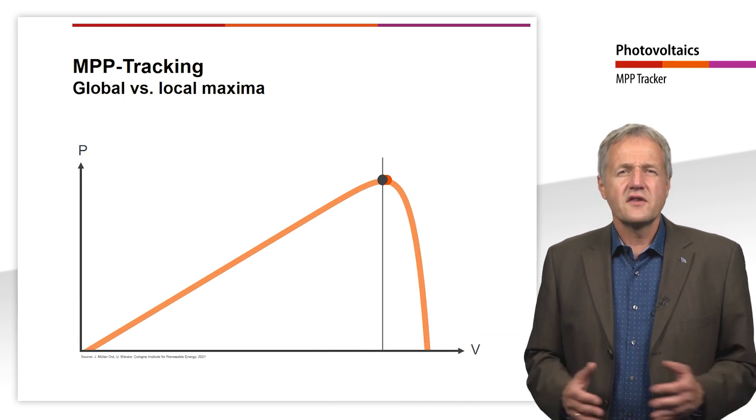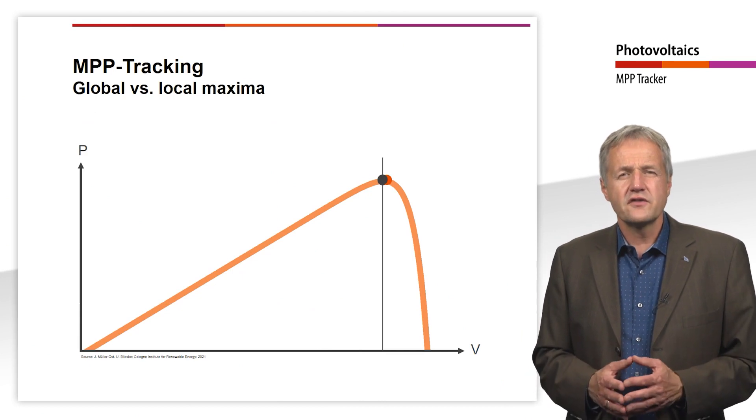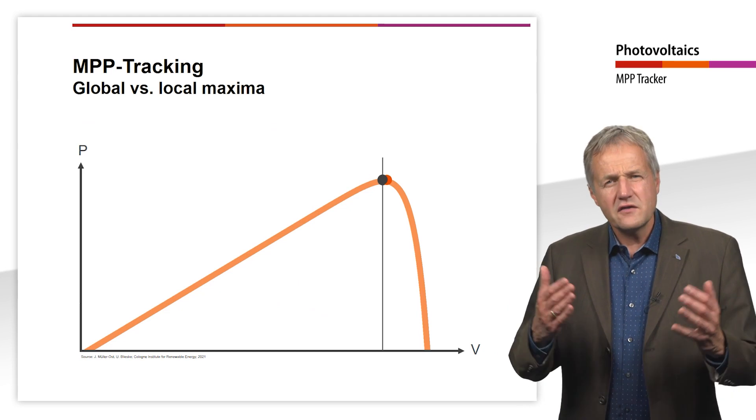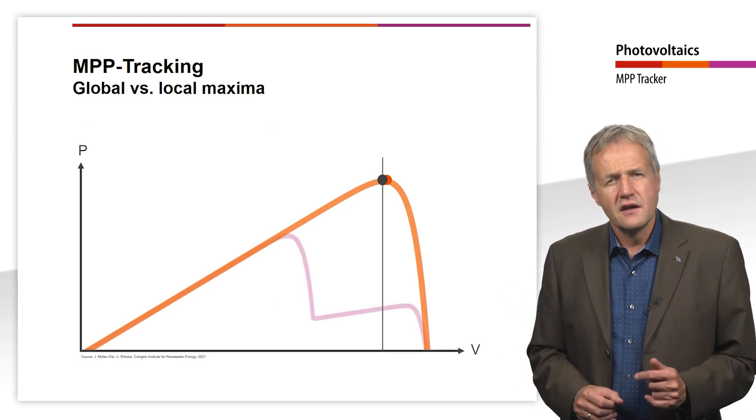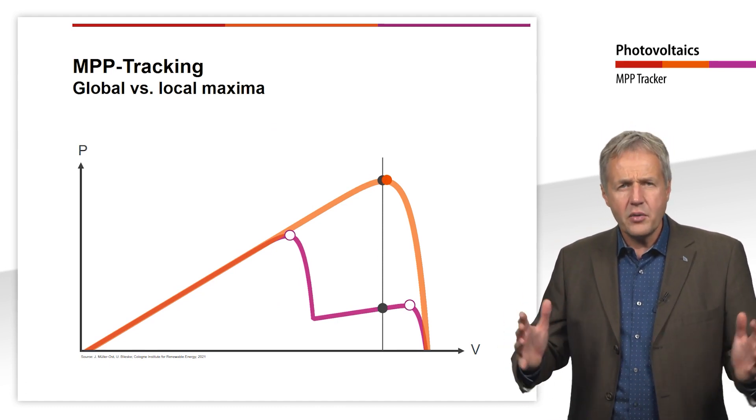We have assumed that the IV curve of the module corresponds to that of an individual solar cell. But in practice this is not always the case. Just remember the IV curve of a module that is partially shaded. In this case there are several local maxima in the power curve.